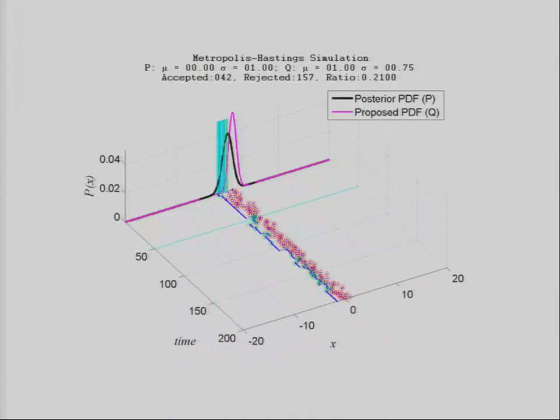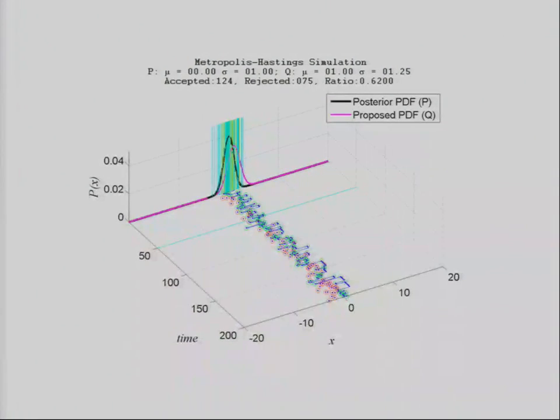I don't have to go into that kind of complicated setting to justify it. This is just a simple example, you know, Gaussian proposal, Gaussian target. If you have a variance that's too narrow, then you're going to reject a lot of samples. But if you have a more wider proposal for this particular distribution, then you accept more.